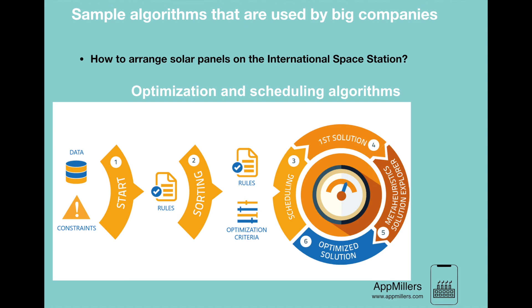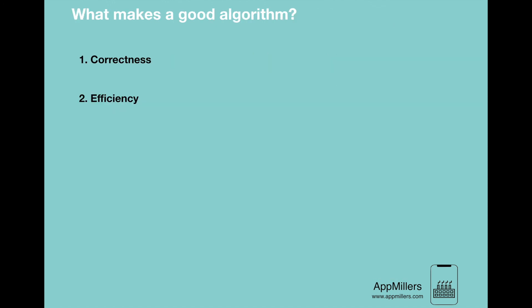By getting deep knowledge about existing algorithms and applying the right one, we can make our programs faster. It's also important to know how to design new algorithms as well as how to analyze their correctness and efficiency. There are two criteria to make good algorithms: the first is that the algorithm solves the problem correctly, and the second is that it does so efficiently.